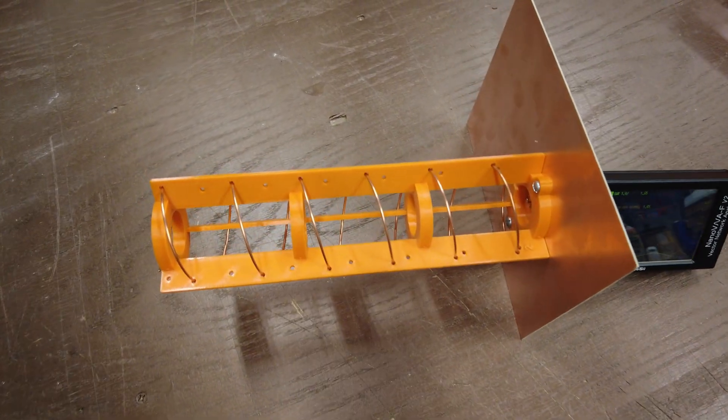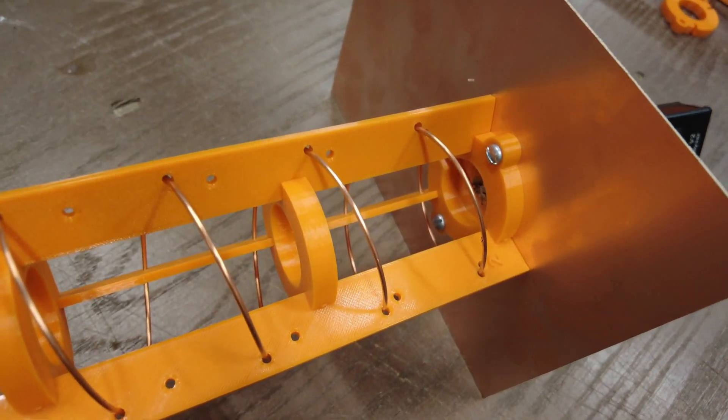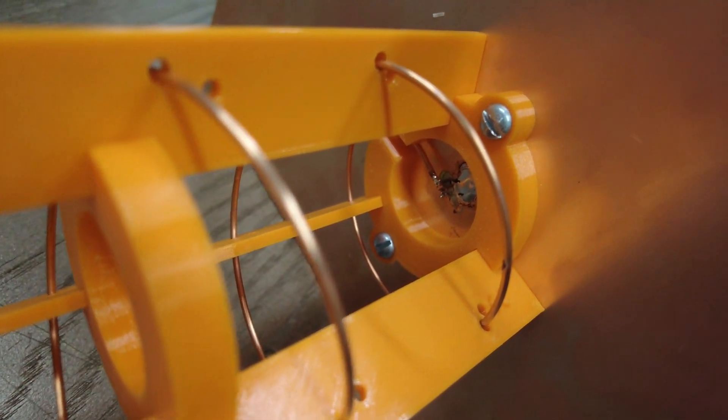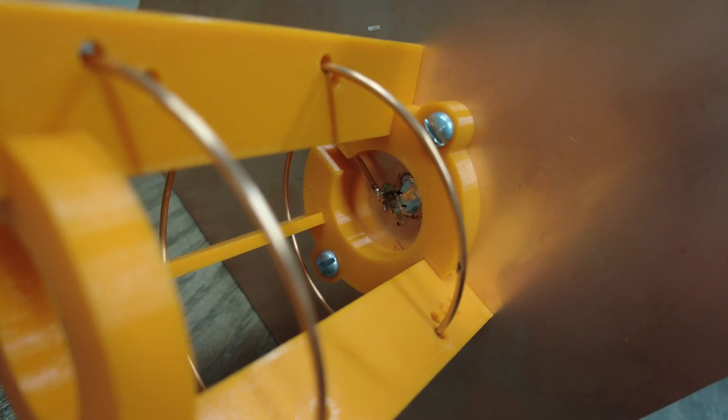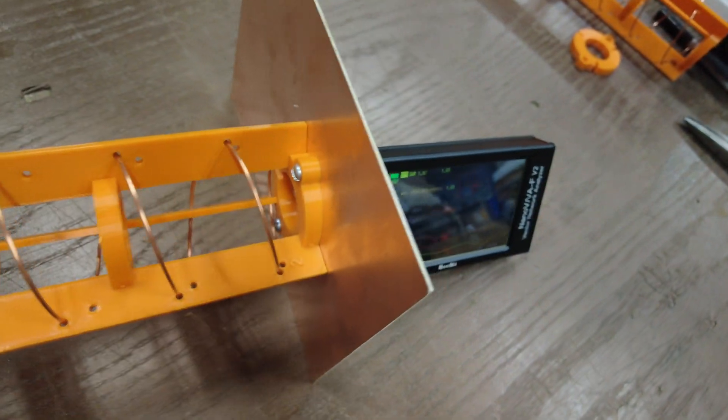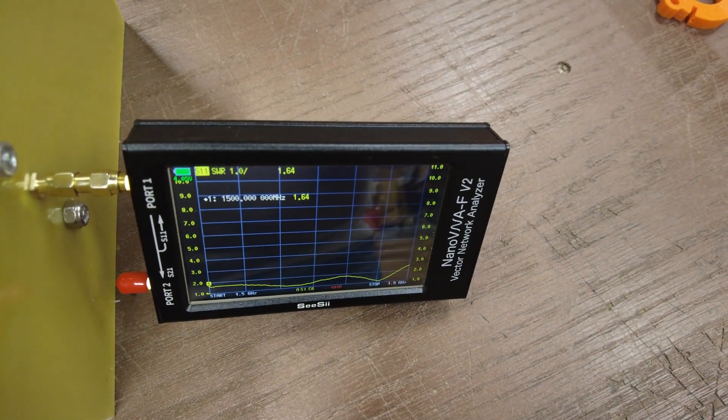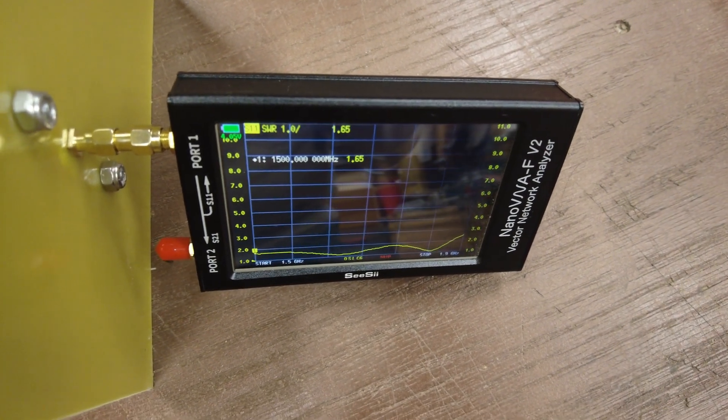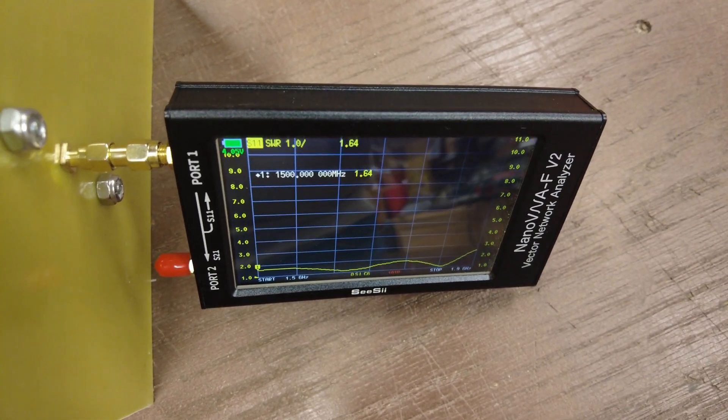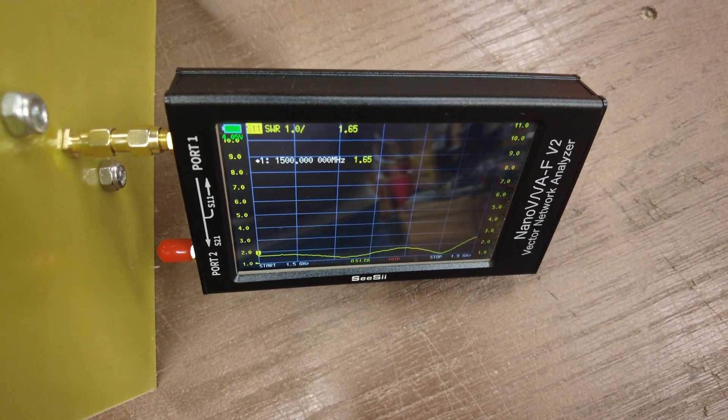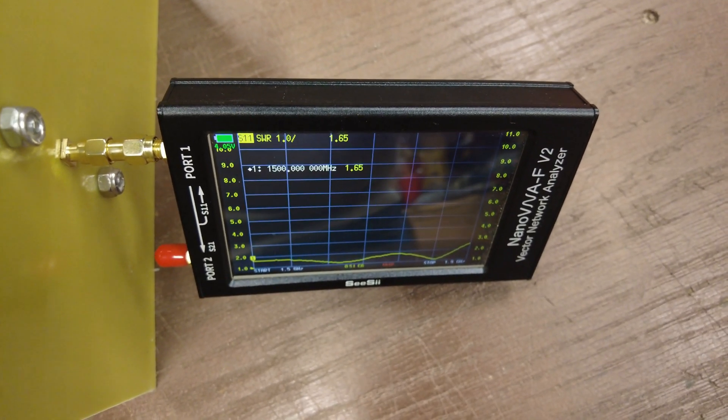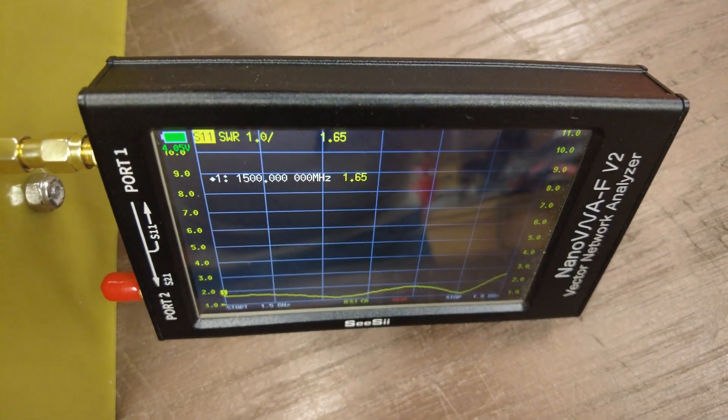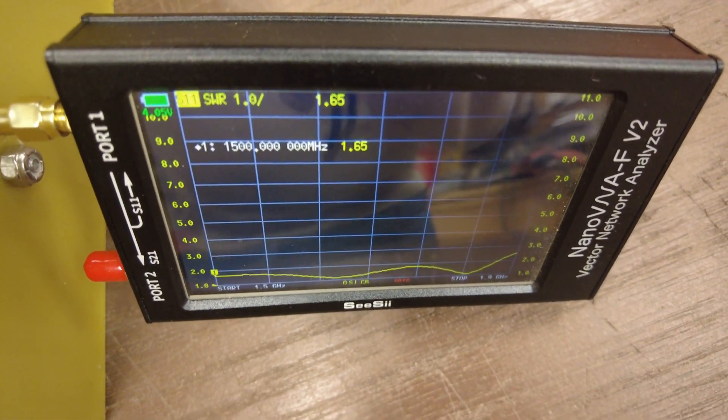I mounted the helix to the backplane, soldered the wire to center pin of the SMA connector. I'm using a NanoVNA. It's the F version, fairly recent model. It's pretty accurate, it's the V2.